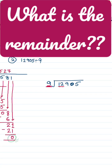We call that the quotient. Then we take two numbers — 9 times 1 is 9 — and we subtract to get 3. Then we bring down 9, and now we have 39. We know that 9 times...